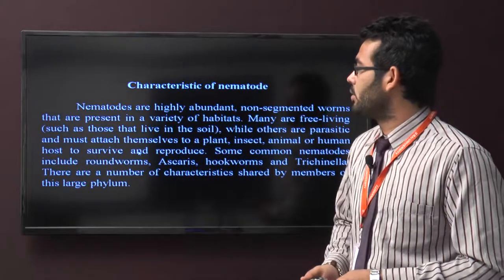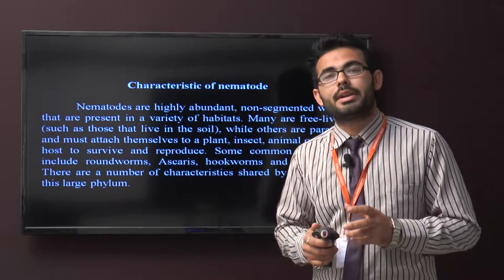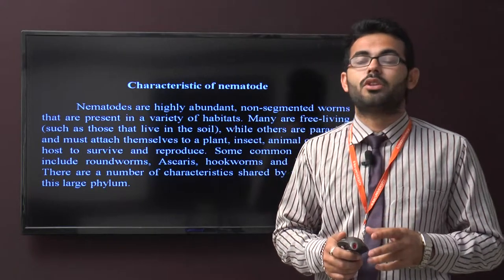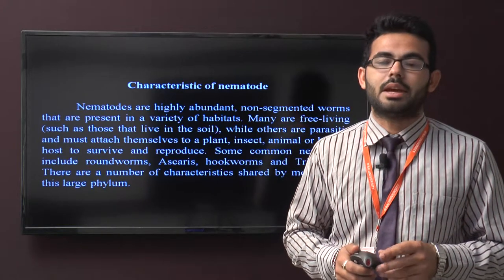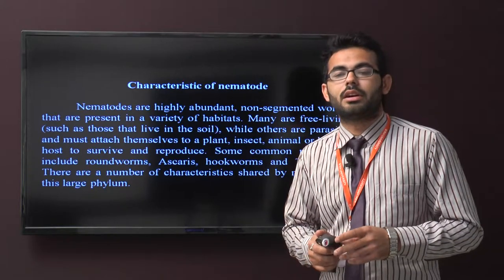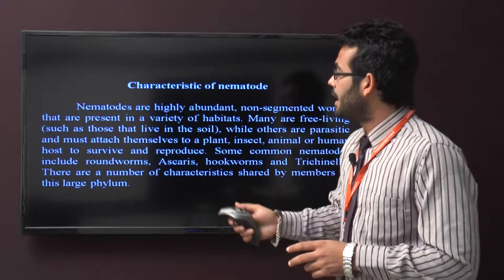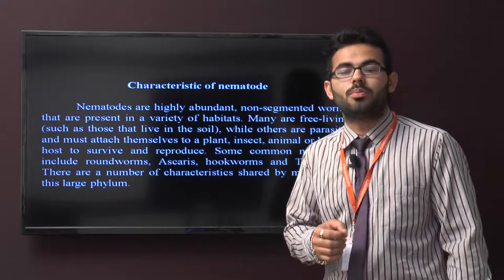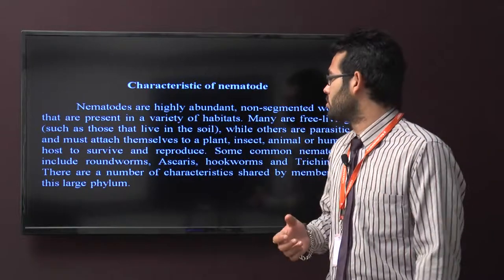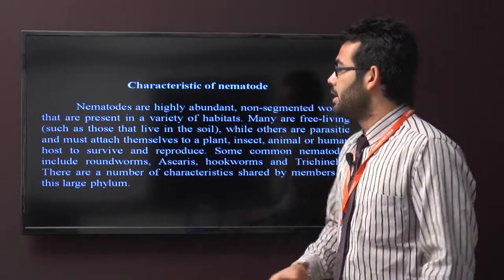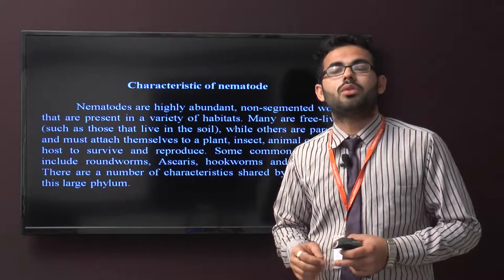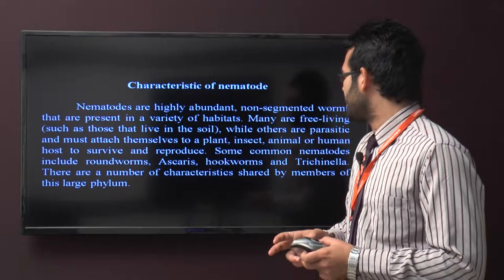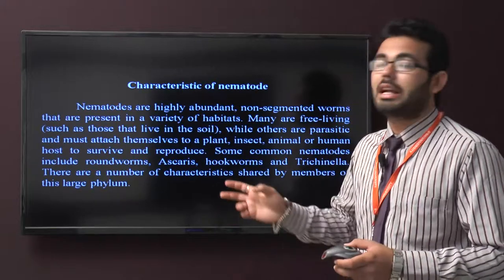Now the characteristics of nematodes. Nematodes are highly abundant, non-segmented worms present in a variety of habitats. Many are free-living while others are parasitic and must attach themselves to plant, insect, animal, or human hosts to survive and reproduce. Some common nematodes include the roundworm, Ascaris, hookworm, and Trichinella. There are a number of characteristics that set nematodes apart within this large phylum.